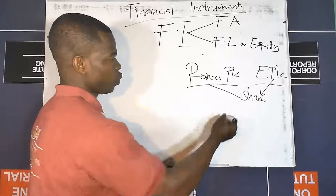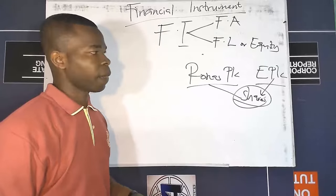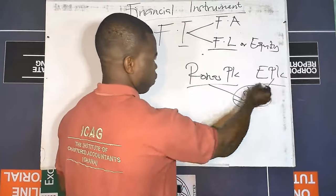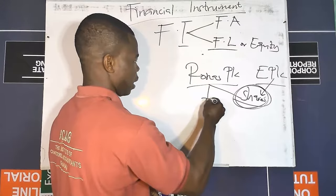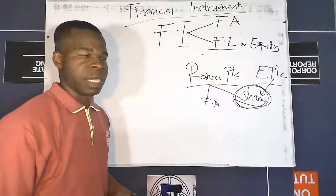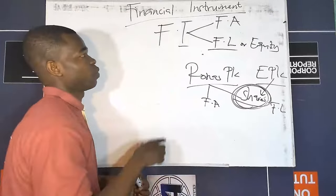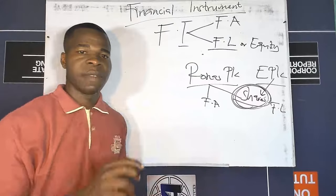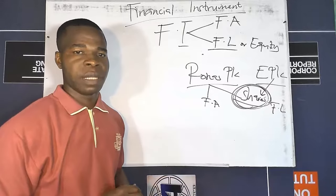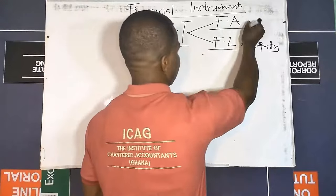To one entity this instrument will be a financial asset, and to the other it will be a financial liability. Ronald's PLC, who is investing in E PLC, will account for this instrument as a financial asset, while E PLC — from whom Ronald's is buying shares — will account for it as a financial liability. So with financial instruments, it is a contract that gives rise to two items: a financial asset of one entity and a financial liability of the other entity.